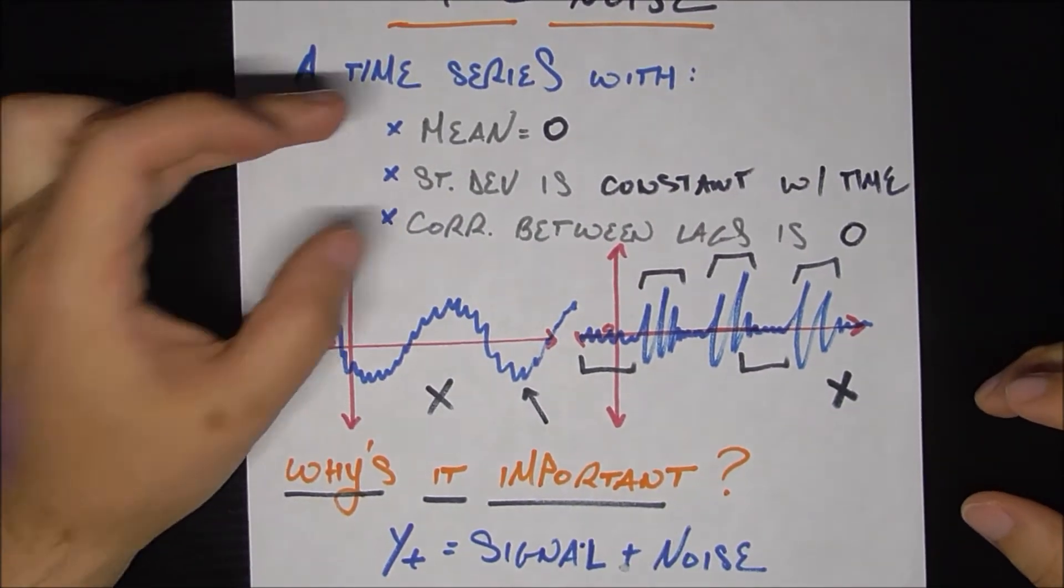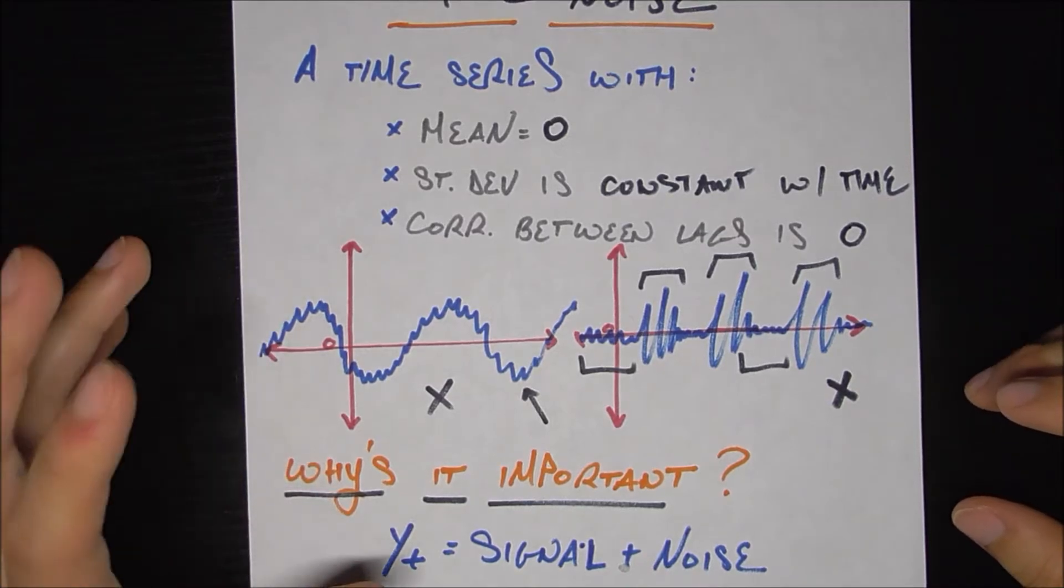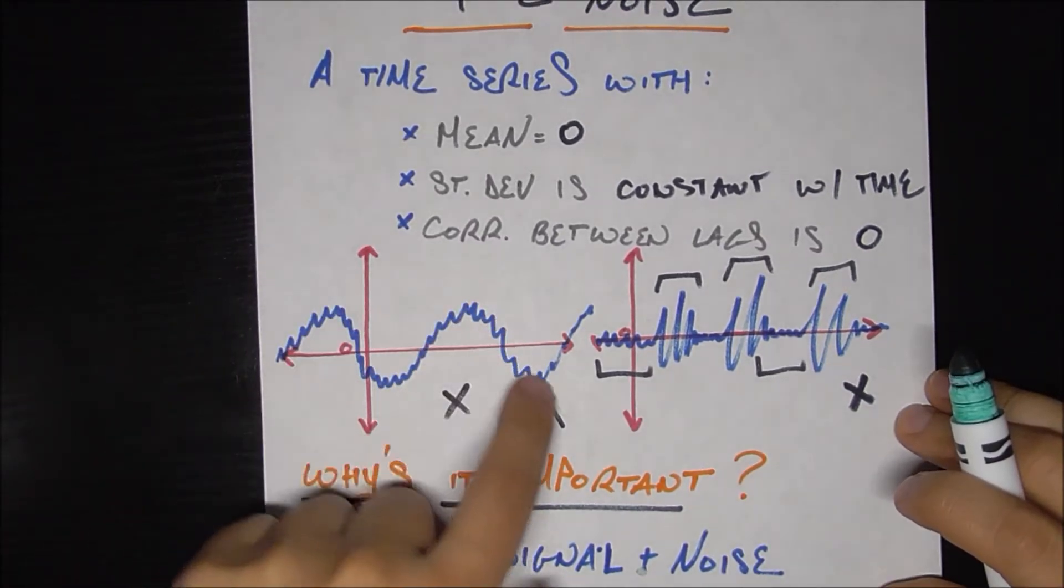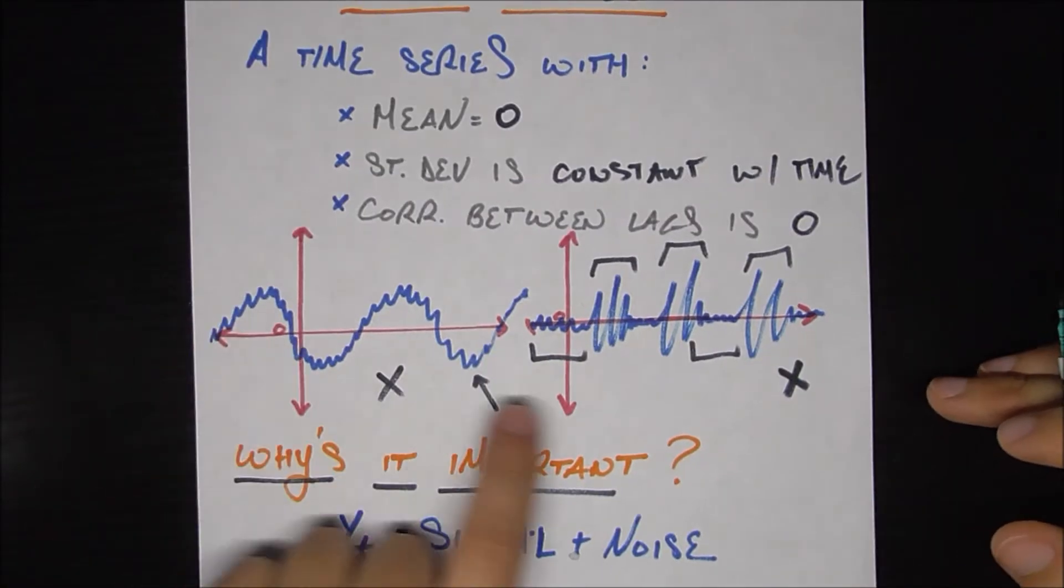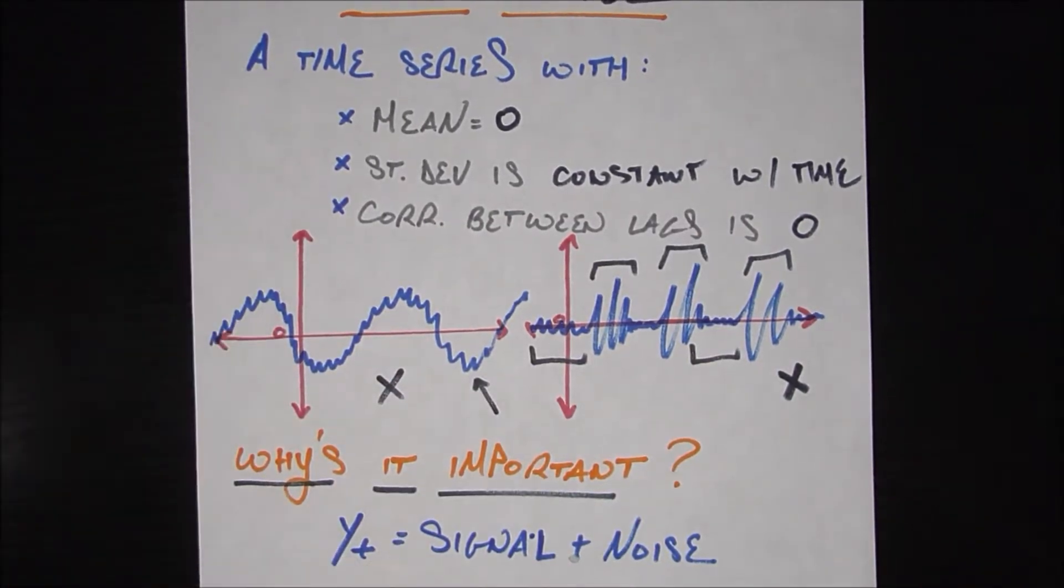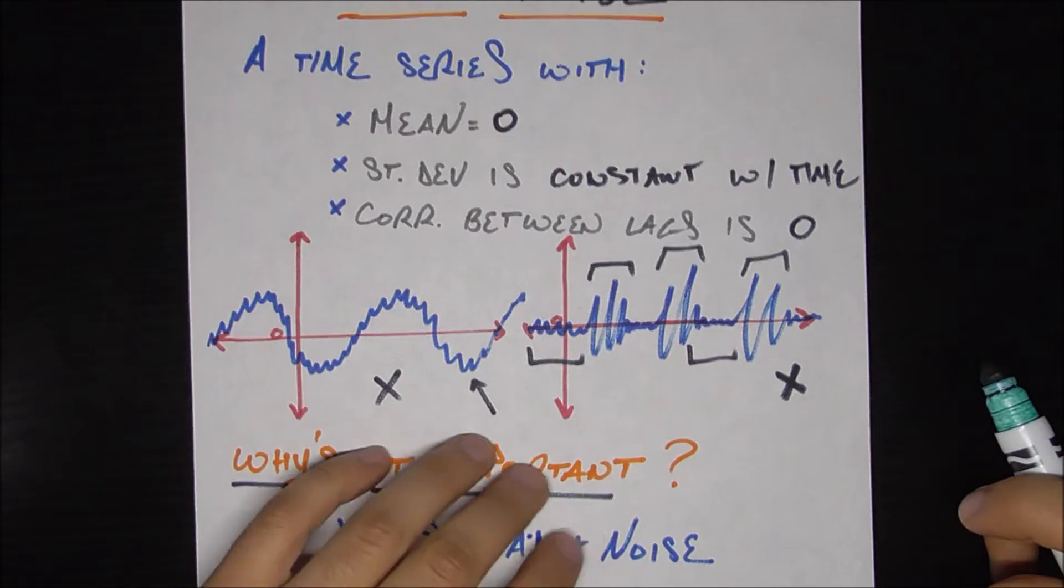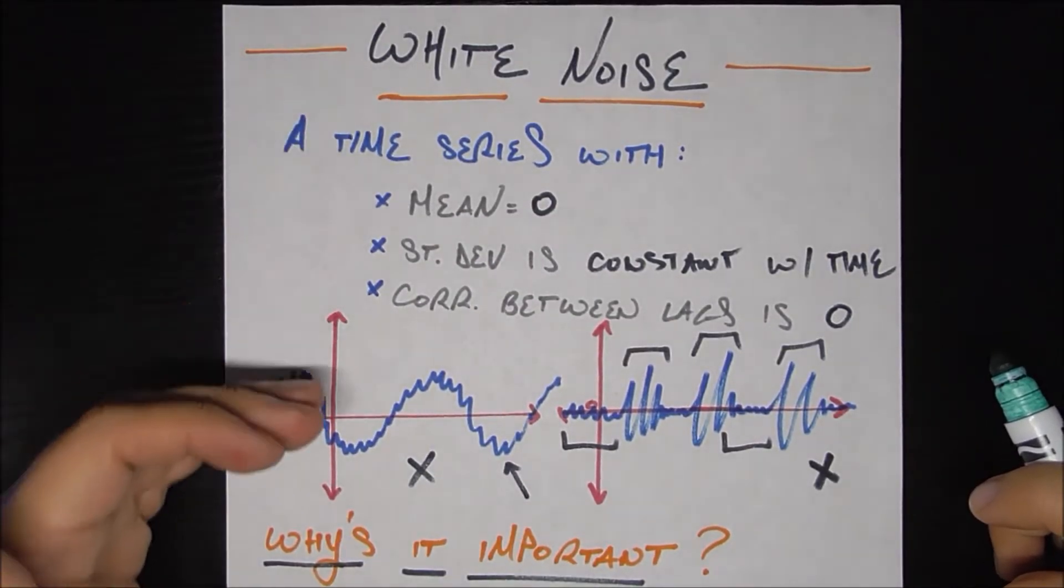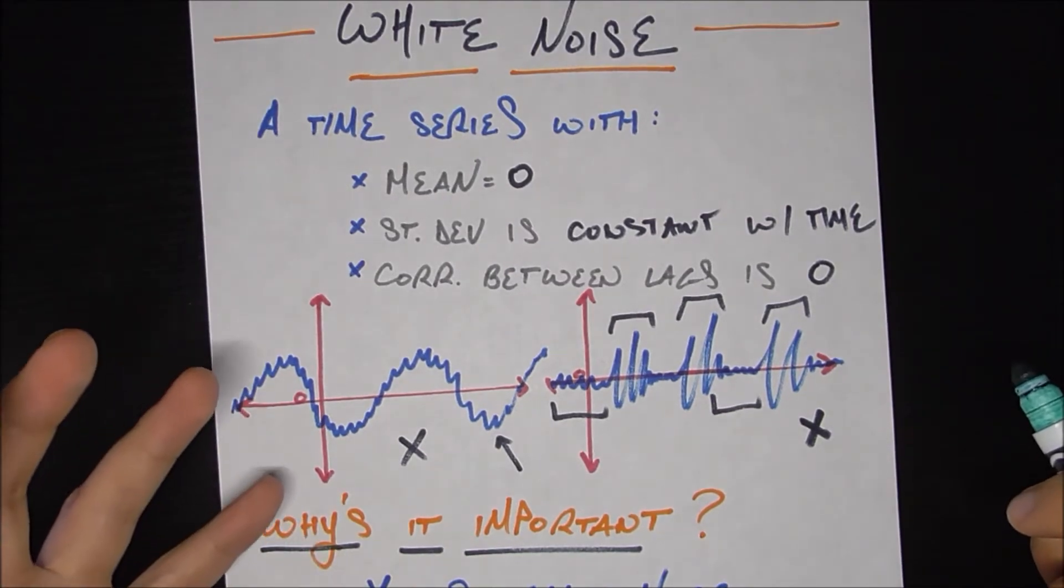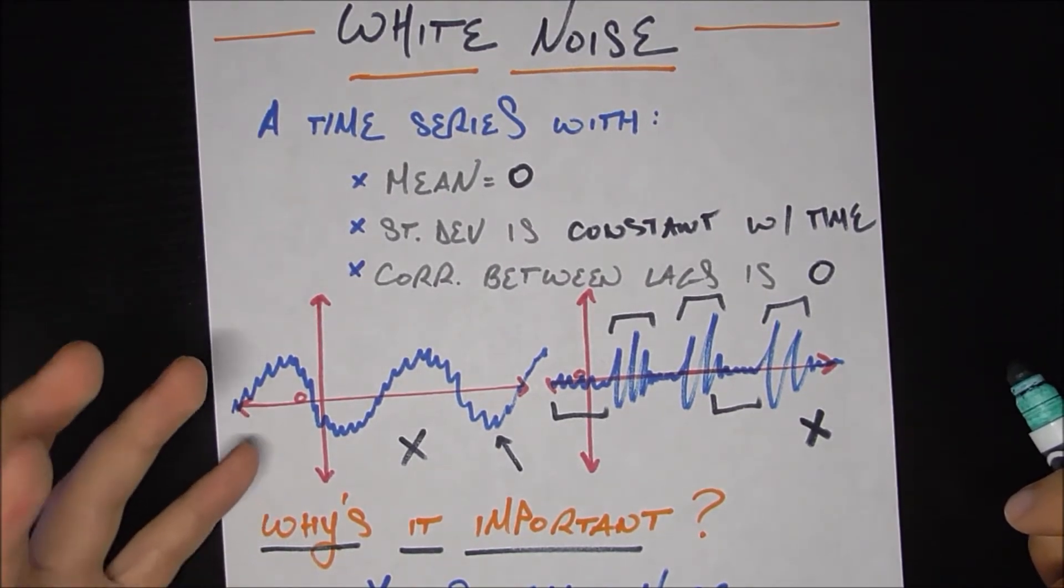To kind of match up this definition to these examples and why they make sense, in both these cases, we could have done more to capture the dynamics of these time series. In the first one, we should have captured this sine wave-like movement somewhere. And in the second one, we should have captured this increased volatility and accounted for it before getting the residuals. So we see that these criteria that make something not white noise or is white noise help us understand when we could have done more to the time series in order to capture the dynamics better.